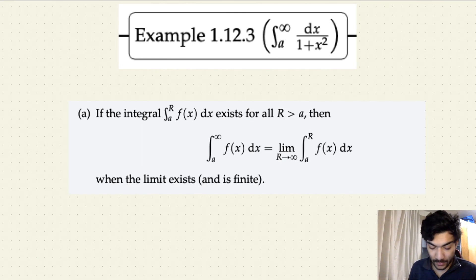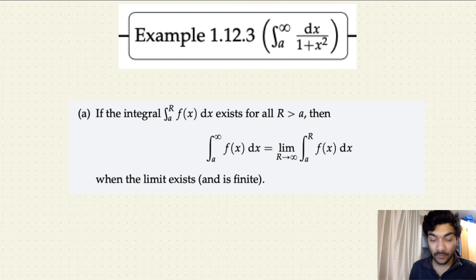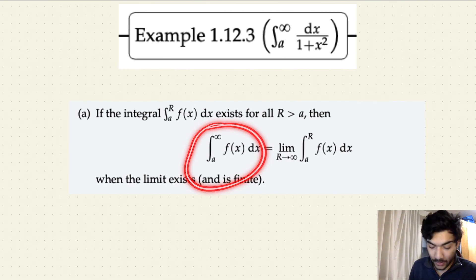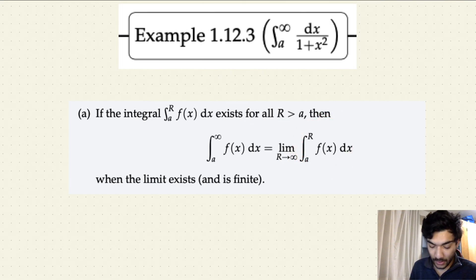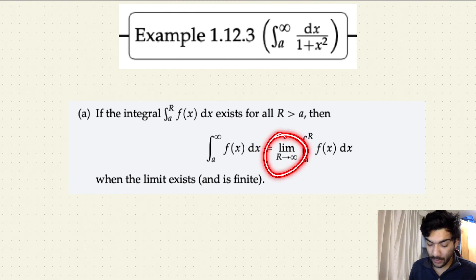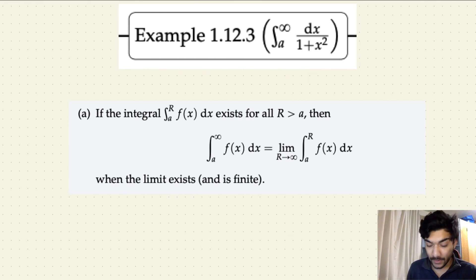The way to solve this type of integral: the condition is that the integral of f(x) dx from x equals a to x equals capital R, where capital R is any real number greater than a, must exist for all real values of R greater than a. What you do is calculate the integral from a to capital R, and after solving it, apply the limit as R approaches infinity.